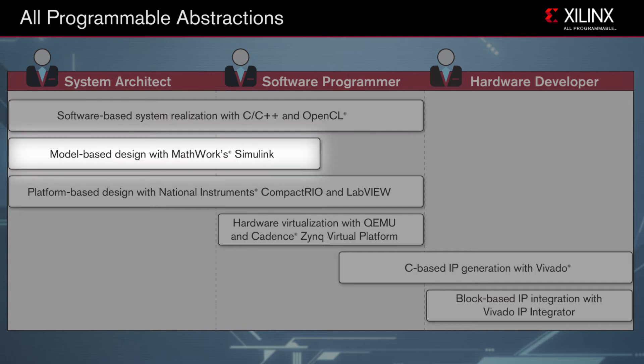For model-based design, the MathWorks has released a new turnkey design flow that automates system assembly and development of designs modeled in Simulink, targeting the Zynq all-programmable SoC. With the new flow, users partition an algorithm into software and hardware modules and then generate C code for the Zynq's dual-core Cortex-A9 ARM processors with the MathWorks Embedded Coder and RTL code for the programmable logic using the MathWorks' HDL Coder or Xilinx's System Generator. This new design flow enables a wider community of developers to take advantage of the industry's first all-programmable SoC without RTL design expertise.